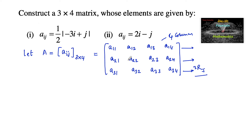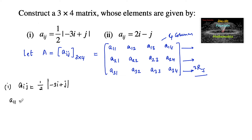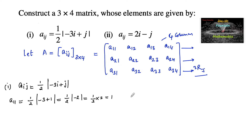We need to find these 12 elements for each problem. For the first one, A_ij = (1/2)|−3i + j|. So A11 = (1/2)|−3×1 + 1| = (1/2)|−2| = (1/2)×2 = 1.